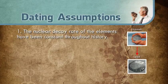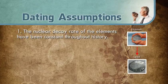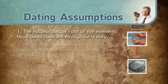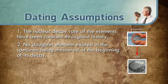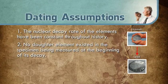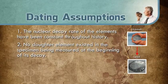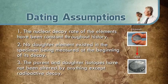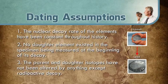Second, no daughter element existed in the specimen being measured at the beginning of its decay process — the dating technique assumes the rock was initially completely composed of the parent element, like uranium. So an assumption about the initial condition of the rock is made. Third, the parent and daughter isotopes have not been altered by anything except radioactive decay — the amount of elements present in a sample haven't ever been affected by any outside element. For example, a lava flow didn't occur which could have picked up some element from elsewhere and added it to the sample being measured or taken some away, corrupting the accuracy of the measurement.